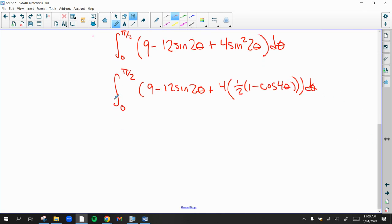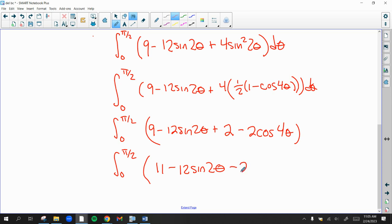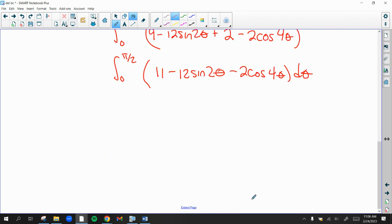Now I'm just going to clean it up a little bit before I integrate. So we have 9 minus 12 sine of 2 theta plus 2 times all of this, 4 times 1 half. So I'm going to go plus 2, minus 2 cosine of 4 theta. And then the one last thing I'm going to do is I'm going to combine like terms. 9 plus 2 is 11. So hopefully I didn't screw anything up there. When you do it by hand like this, there's a lot of places to screw up.